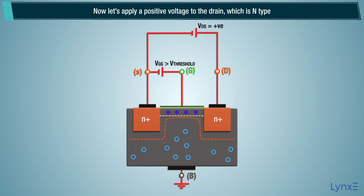Now let's apply a positive voltage to the drain, which is N type. When we applied positive potential to the drain, the depletion region near the drain widens due to reverse PN junction.